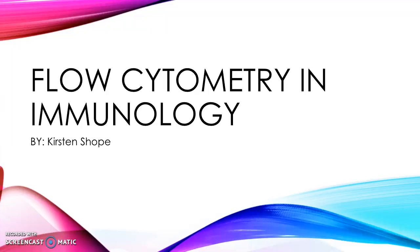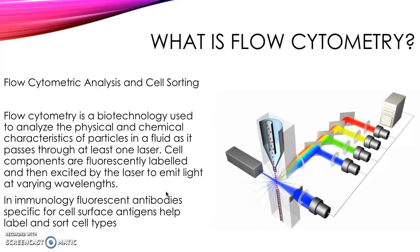Today we're going to talk about flow cytometry, specifically in immunology and how flow cytometry plays a role in immunological cytology. Flow cytometric analysis and cell sorting is a biotechnological tool used to analyze the physical and chemical characteristics of particles in a fluid as it passes through at least one laser. Cell components are fluorescently labeled and then excited by the laser to emit light at varying wavelengths.